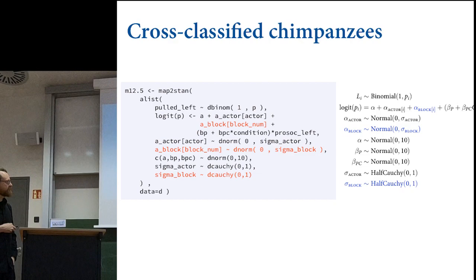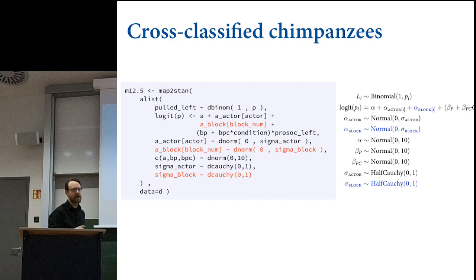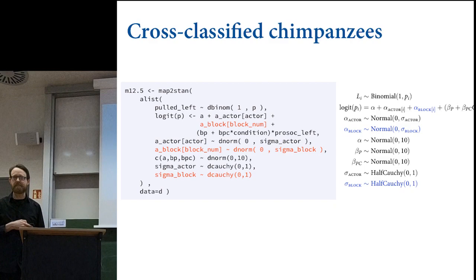When you add varying intercepts on block, you've got to add the regularizing distribution and then you have to add hyper-priors—a prior for sigma block. You don't need another prior for a grand mean because there's only one grand mean.